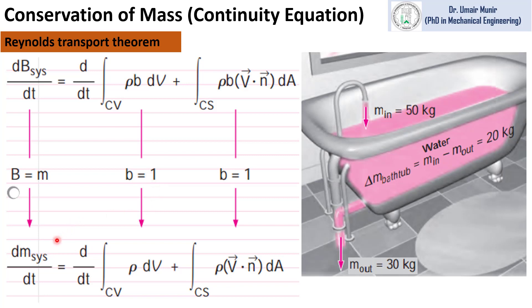We will get the continuity equation in this form. This is an example of a bathtub in which the mass of water entering the tub is equal to 50 kg, and at the outlet it is 30 kg. So 20 kg is being accumulated in the tub. The amount of water accumulating in the tub is represented by this term, which is the change of mass in the control volume with respect to time.